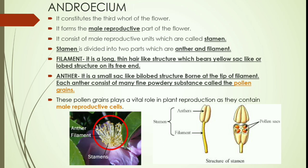Pollen grain and pollination will be studied further in the chapter. The anther produces pollen grain and is present on the hair-like structure called filament. Both filament and anther together are known as stamen, and they are the male reproductive unit of androecium.